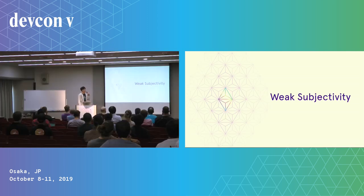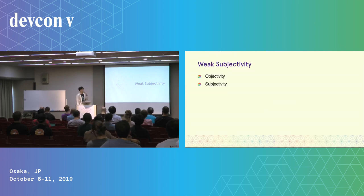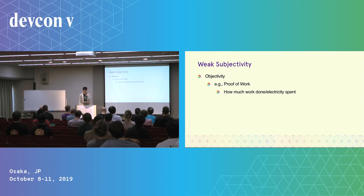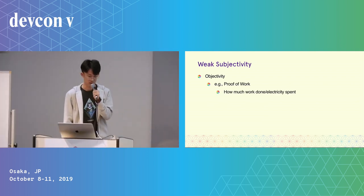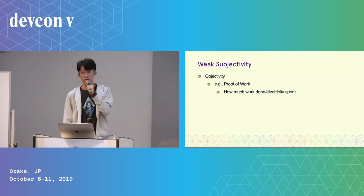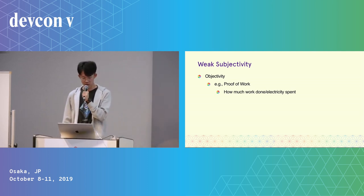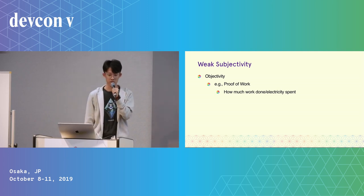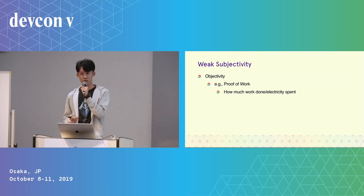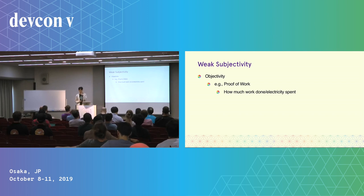First, I'll talk about what subjectivity means in this context and why it is weak. Objectivity in this context could be, for example, like proof of work — how much work done, how much electricity spent. Any node joining the Bitcoin or Ethereum network knows that it can request proof of work from any peers, and then use this proof of work to objectively identify the canonical chain.